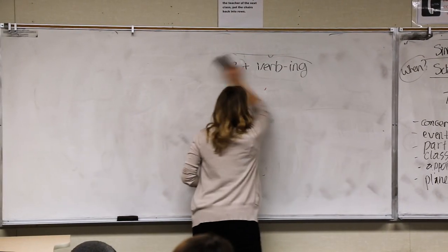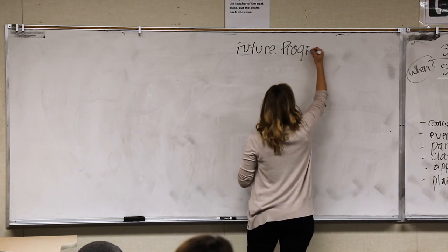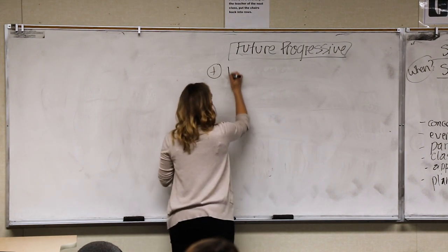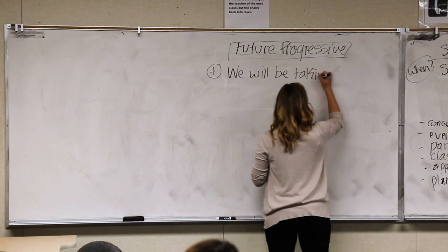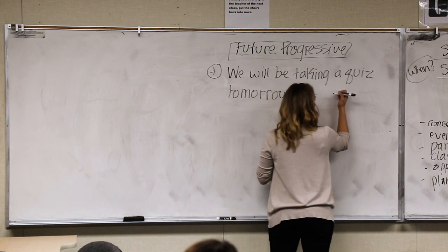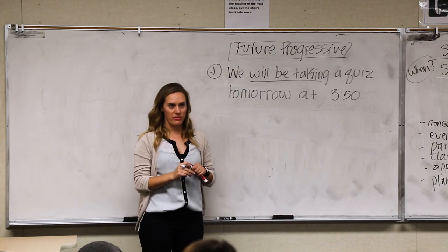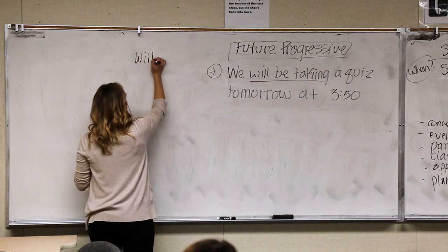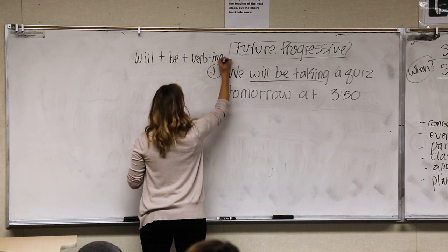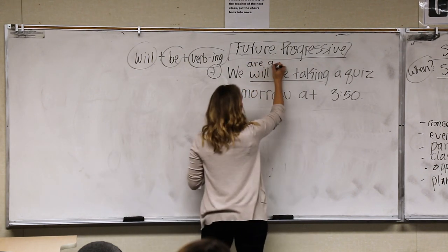Finally, the last one is the future progressive, and then you guys can practice because we only have five minutes. The future progressive looks like this: 'We'll be taking a quiz tomorrow at 3:50.' So the future progressive is will + be + verb-ing — three parts.